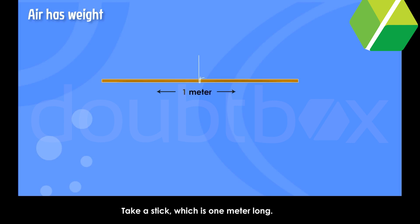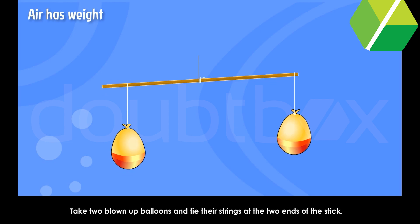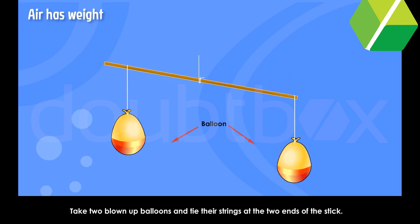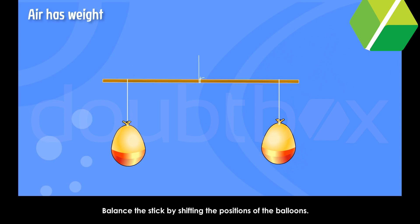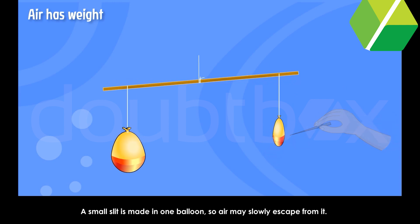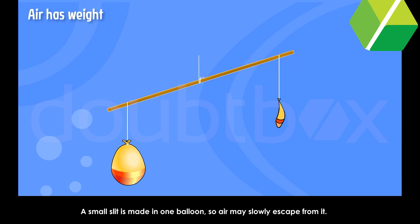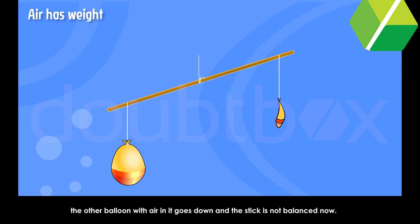Air has weight. Take a stick which is one metre long. Take two blown-up balloons and tie their strings at the two ends of the stick. Balance the stick by shifting the positions of the balloons. A small slit is made in one balloon so air may slowly escape from it. When all the air has escaped from one balloon, the other balloon with air in it goes down and the stick is not balanced. From this, we can conclude that air has weight.